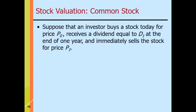Now, what about common stock? Suppose an investor buys a stock today for price P sub zero, receives a dividend equal to D sub one at the end of the next year, and then immediately sells the stock for price P sub one. There is an increased value because the basic concept in selling is to buy low and sell higher than the original cost.